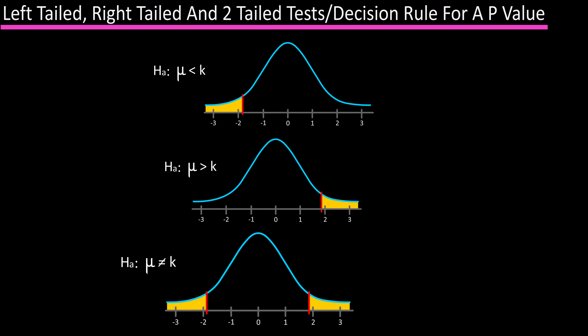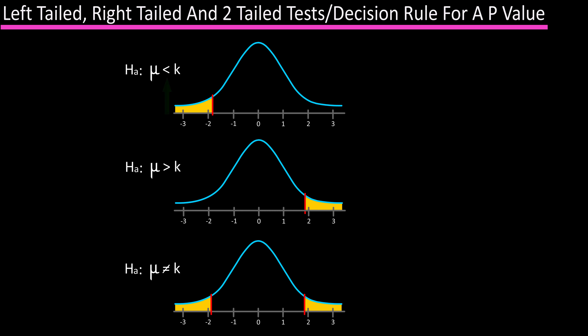It's important to remember: if the alternative hypothesis has the less-than inequality, it's a left-tailed test; if it has the greater-than inequality, it's a right-tailed test; and if it has the does-not-equal sign, it's a two-tailed test. You can also look at the inequalities as arrowheads pointing to the direction of the test needed.